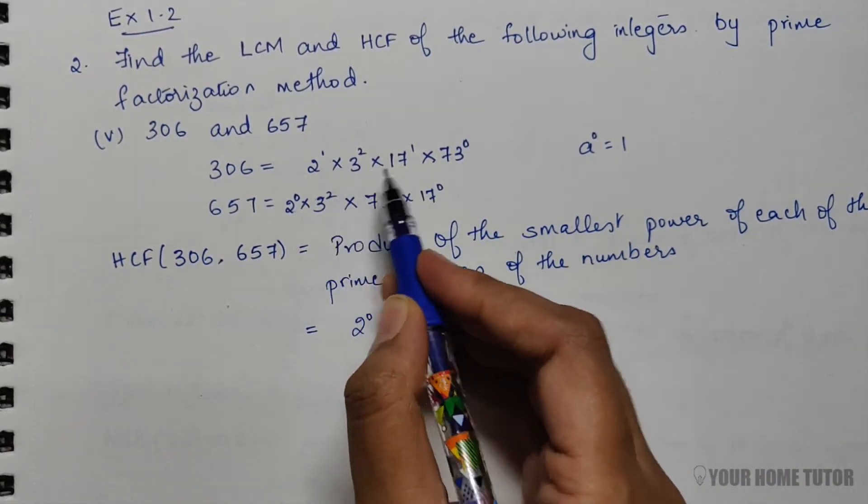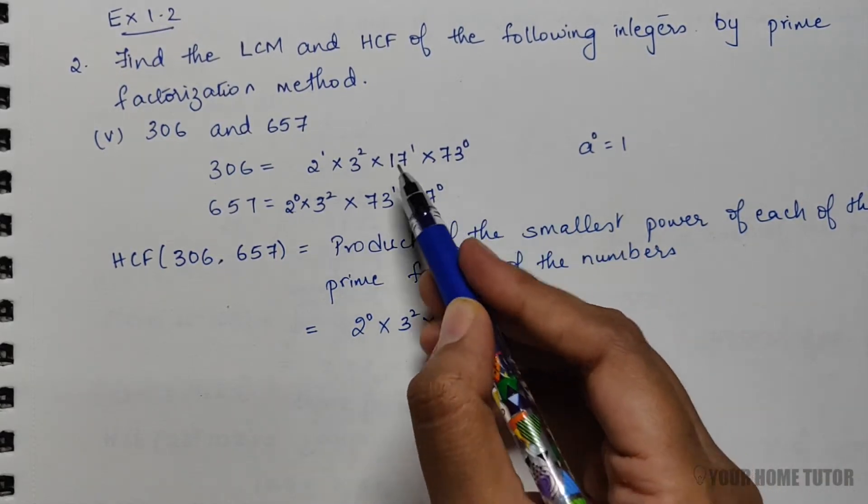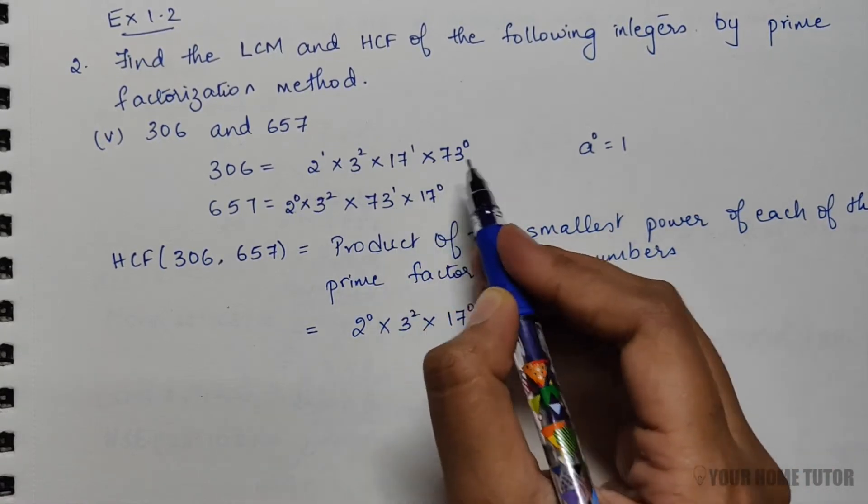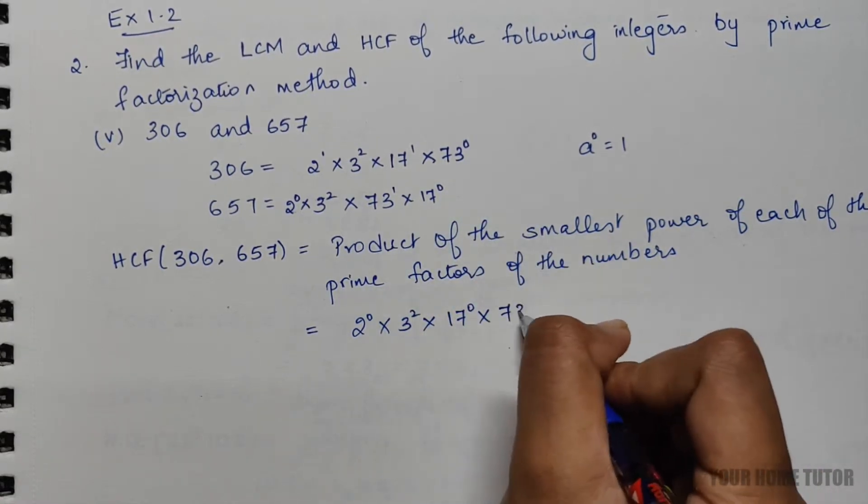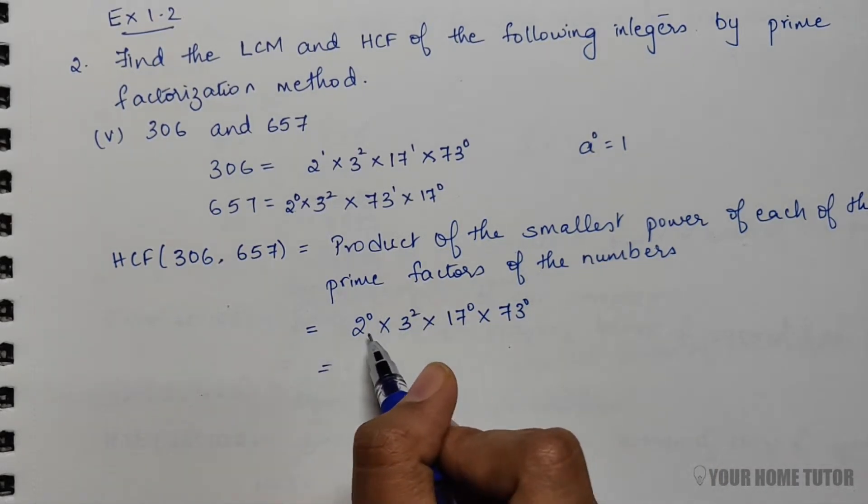Into 3, the smallest power is 2, so 3^2, into 17, the smallest power is 17^0, into the smallest power of 73, which is 73^0. So that is nothing but 3^2 × 1 × 1 × 1 = 9.